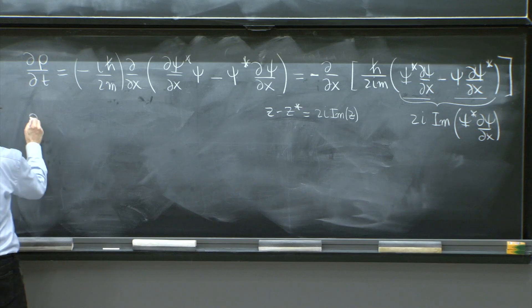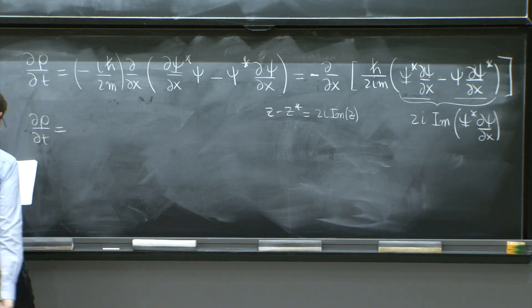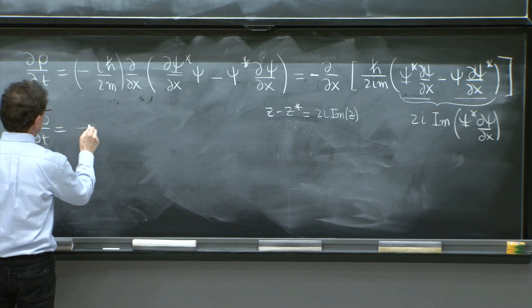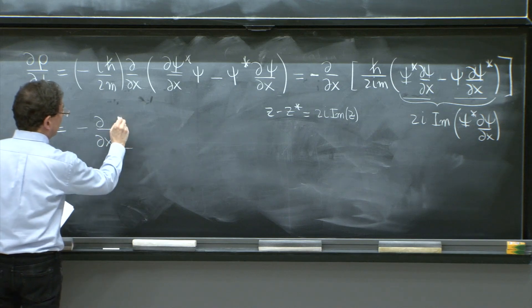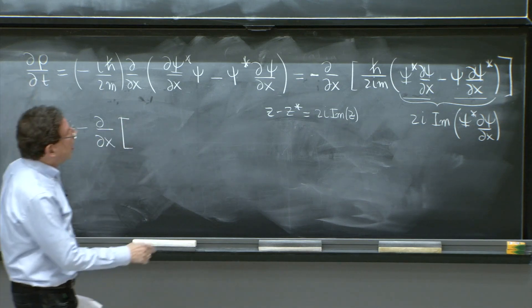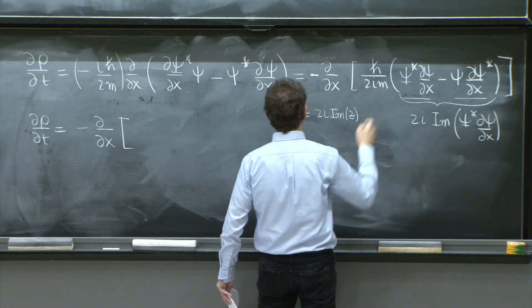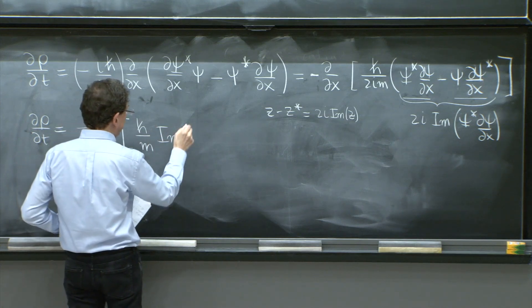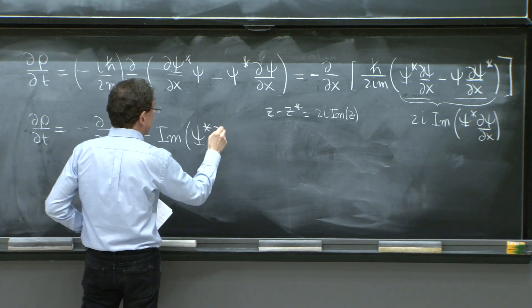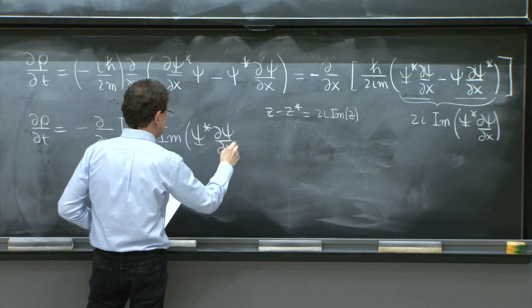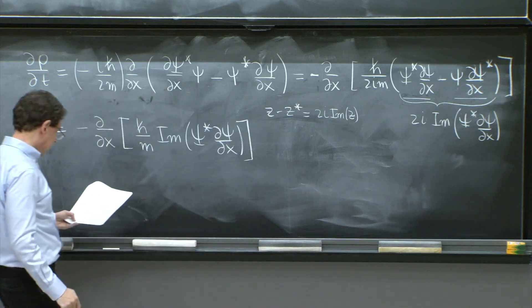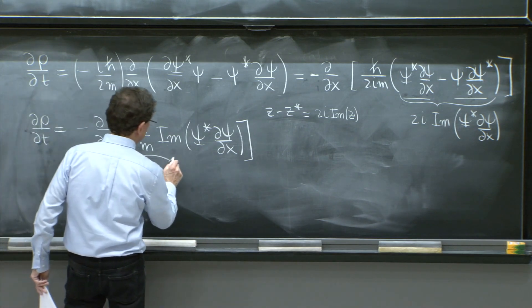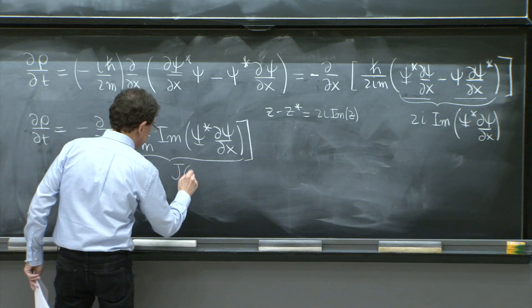So from here, this whole thing is 2i times the imaginary part of psi star d psi/dx. So d rho/dt is equal to minus d/dx of 2i times the imaginary part of that, cancel the 2i. You get h bar over m imaginary part of psi star d psi/dx. And this quantity is going to be called the current density.